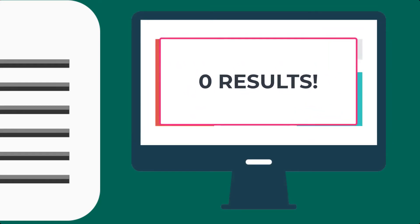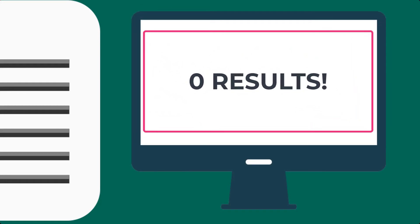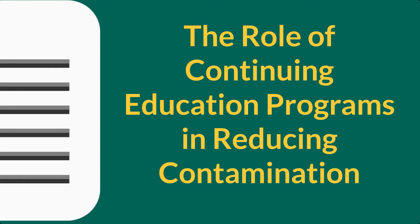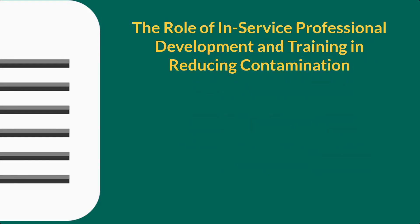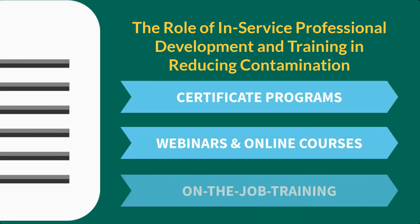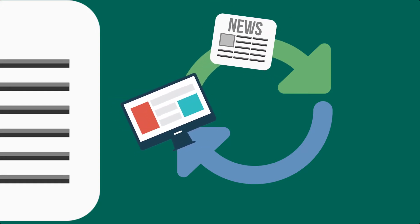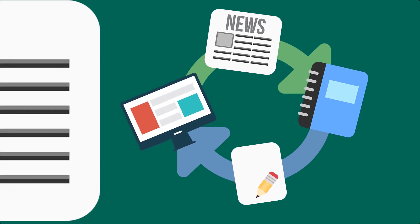Second, you might find that there's no research, or very little research, on your overarching review topic. In this case, you'd want to scale up and revise the scope of your paper. For example, let's say you started out with the intention to research the role of continuing education programs on reducing contamination, but you only find 10 articles. You'd want to broaden your topic in a meaningful way — you could expand your focus to include all forms of education specifically designed for in-service professionals, including certificate programs, webinars, online courses, and on-the-job training. There's no right or wrong way to scale up or scale down, but you will be more successful if you consult the research as you go through the process of broadening or narrowing your focus.